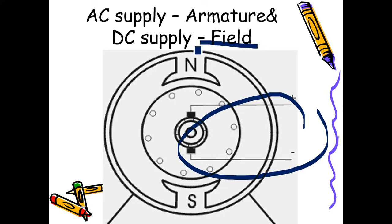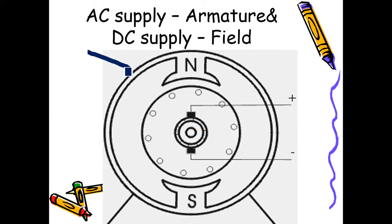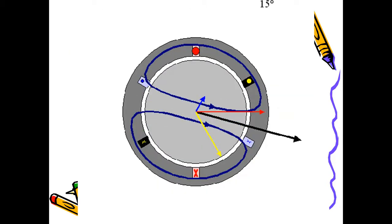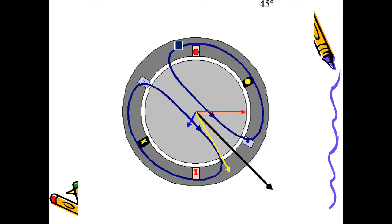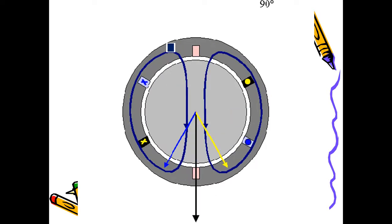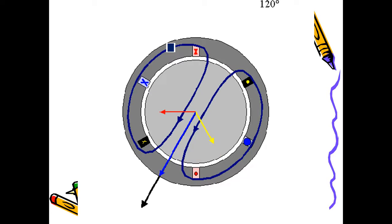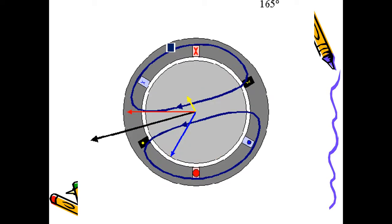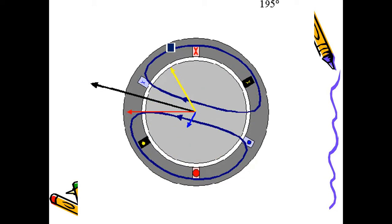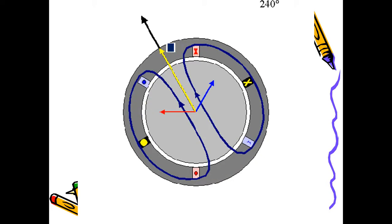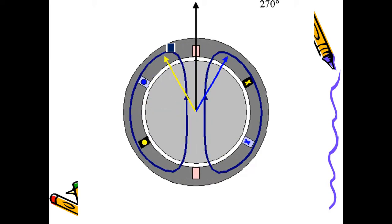The stator will be given AC supply. Generally three-phase AC supplies are used, so the stator is the armature given around 415 volts for small motors. When AC is given, an alternating or revolving magnetic field is set up. The RYB phases are shown by vector diagrams, and at different instances they will have different magnitudes.